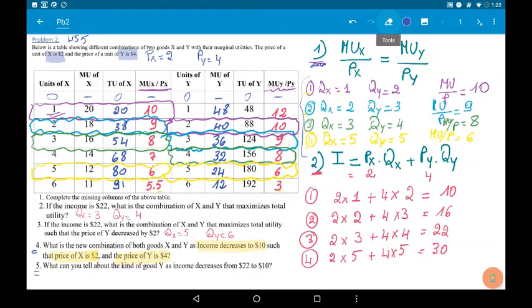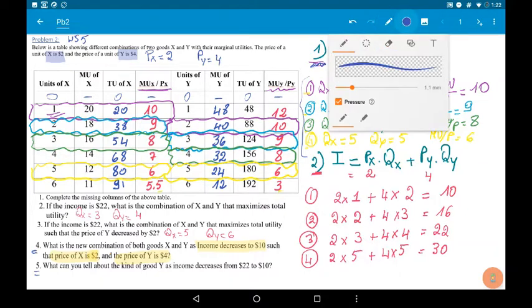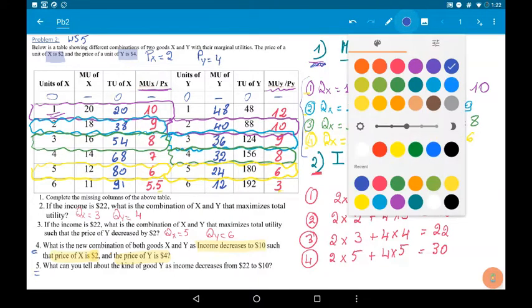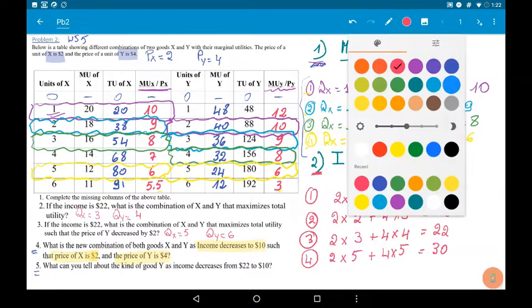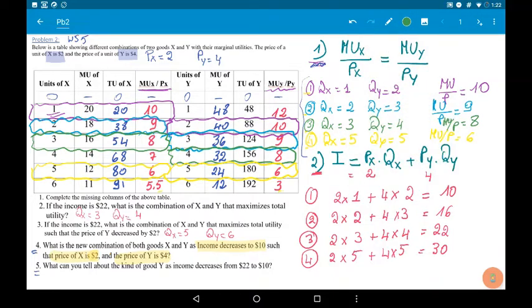Now, let's see which combination satisfies the second condition. Now, income equals $10. So, we need to see for these four combinations here, which one has a total spending of $10.